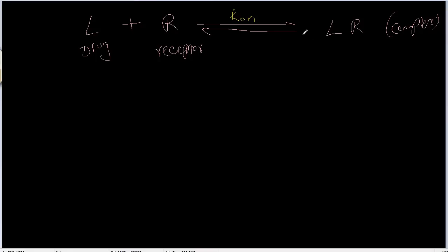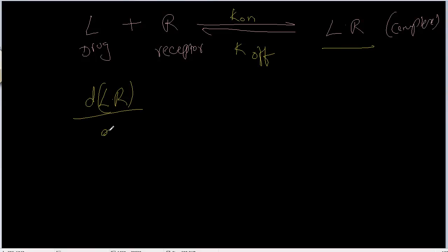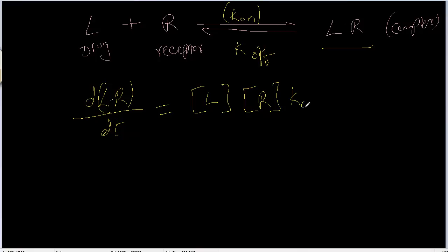After a certain time, the ligand, receptor, and ligand-receptor complex will reach an equilibrium. The reaction also goes backward — the ligand and receptor separate at a rate of K_off, to form ligand plus receptor again. The rate of change of the ligand-receptor complex with respect to time equals the concentration of ligand times receptor times K_on, minus L times R times K_off.